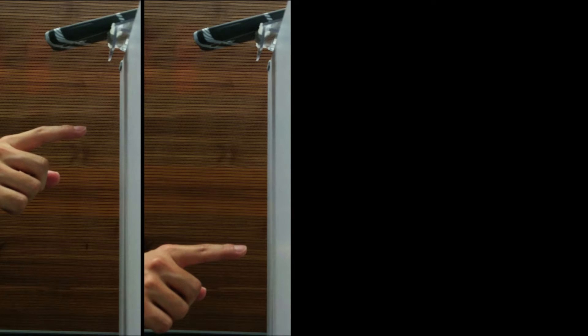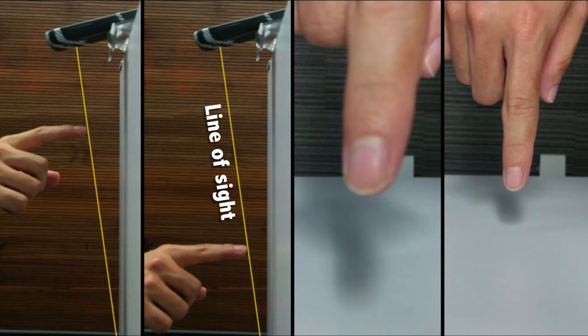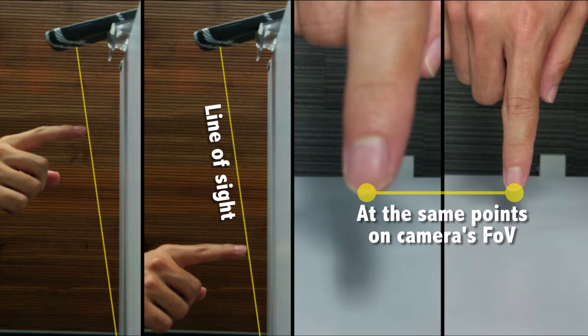A major challenge for pinpointing the fingertip with only a single commodity camera is the lack of precise distance to the finger. Fingertips at different points on a line of sight appear at the same points on the camera's field of view.